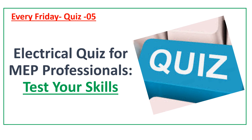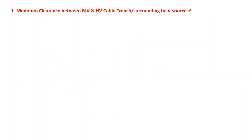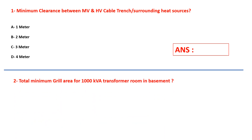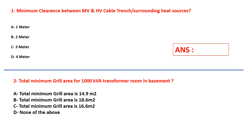Without further delay, let's start. Question number one: what is the minimum clearance between MV and HV cable trench or surrounding heat sources? The answers are: one meter, two, three, or four. Select your answer. Question number two: what is the total minimum grill area of a 1000 kVA transformer room in a basement? Answers are 14.9 meter square,